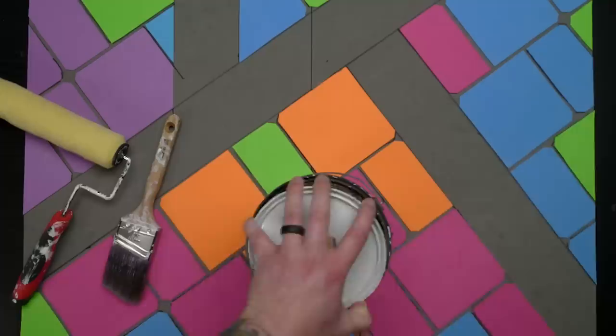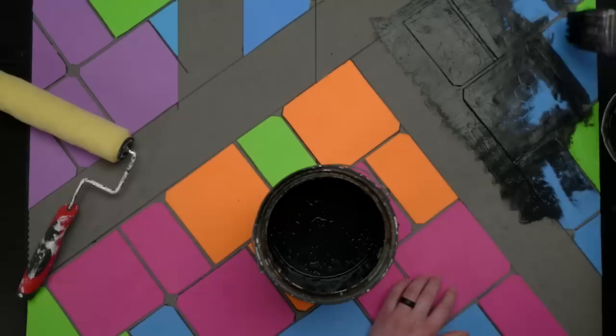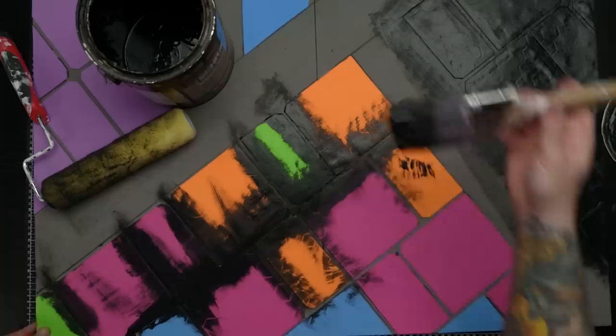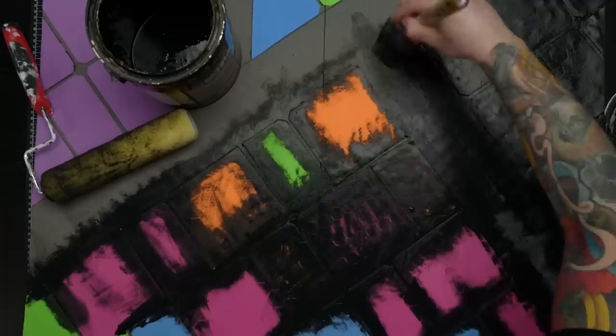To prime this, I opted for black latex interior paint. This is the same kind of paint that I used to paint my studio walls. It's a good fit here because a large area needs to be covered and it will remain flexible over time. Latex paint has latex in it, which gives a certain amount of elasticity that would be necessary on something that's gonna bend and fold like this mat.